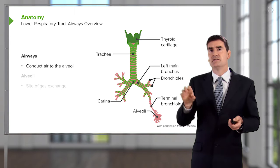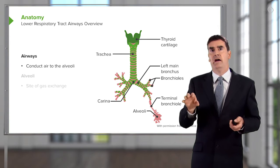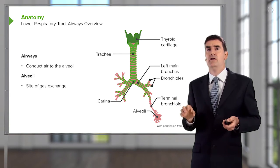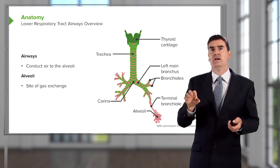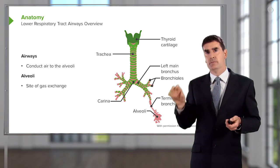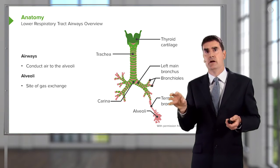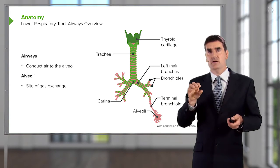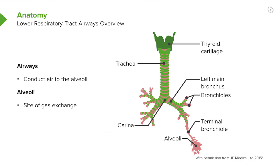The airways are there to conduct air to the alveoli. And in the alveoli, the oxygen in the air gets into the blood and the carbon dioxide in the blood gets into the alveoli. So the business end of the lungs is the alveoli, and the airways are really just there to ensure that air is supplied to the alveoli.